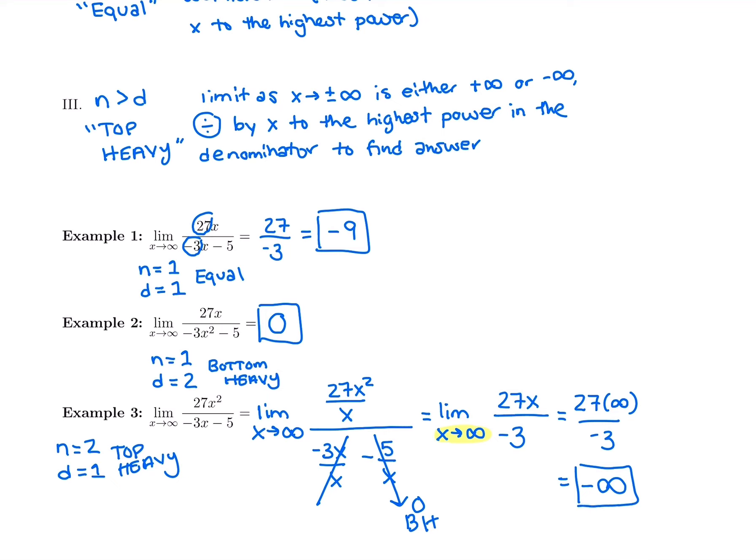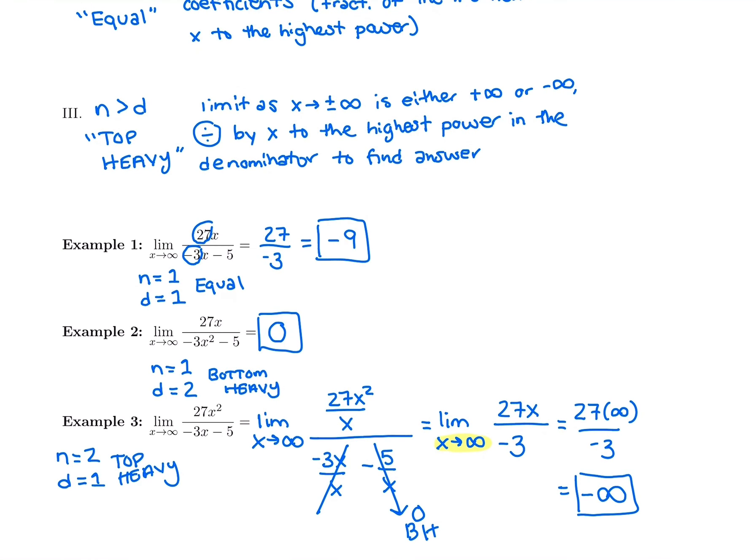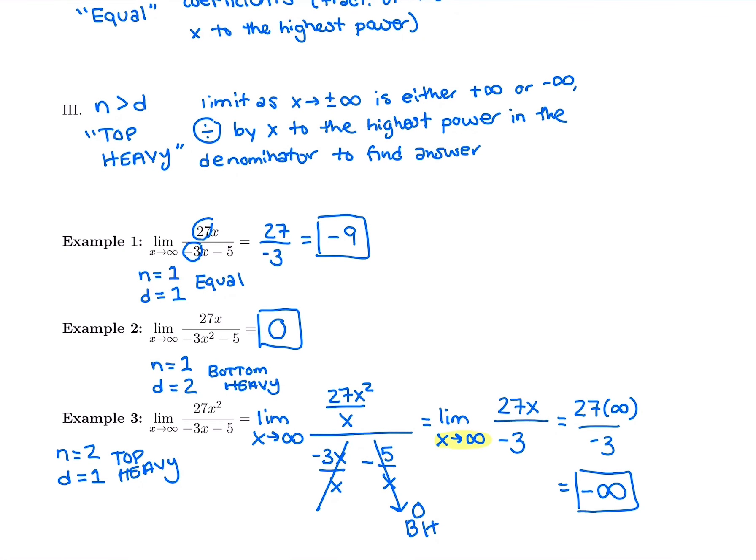So there are all three rules. Bottom heavy is the best — the answer is always zero. Equal — take the ratio of leading coefficients. Top heavy — your answer is infinity or negative infinity; divide all terms by x to the highest power in the denominator, cross out what's bottom heavy, simplify what's left, and plug in to figure out which infinity is your answer.